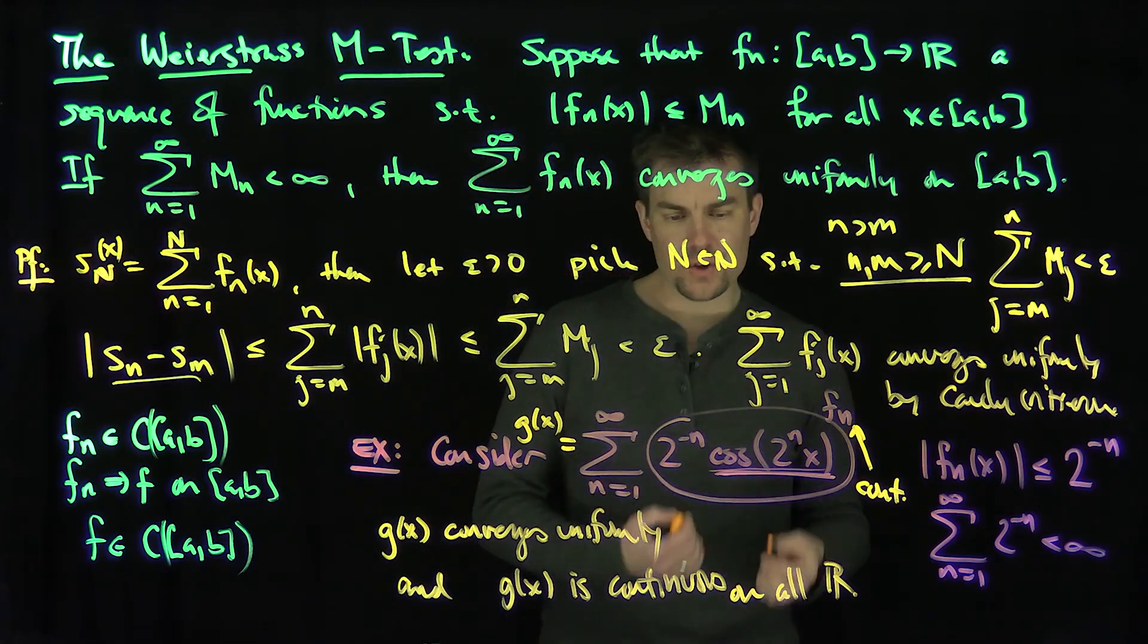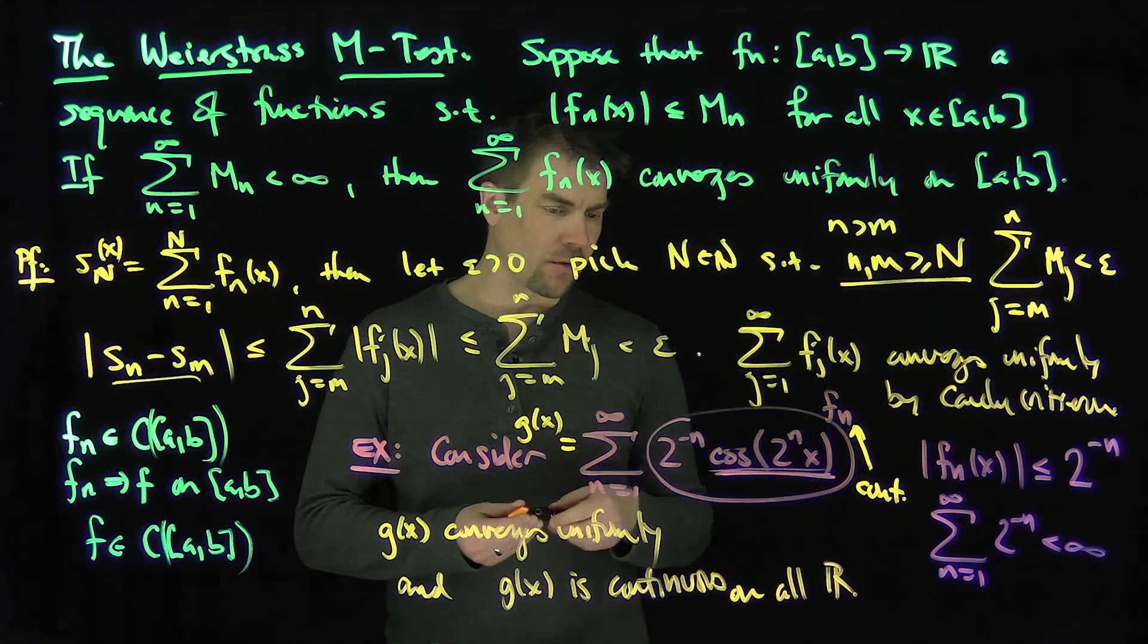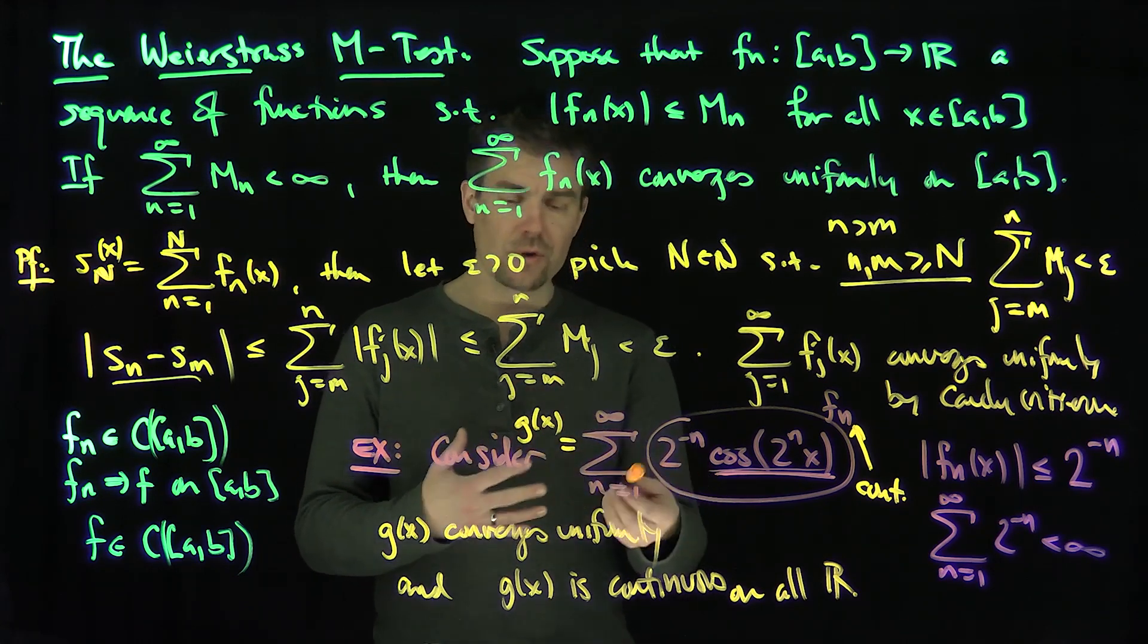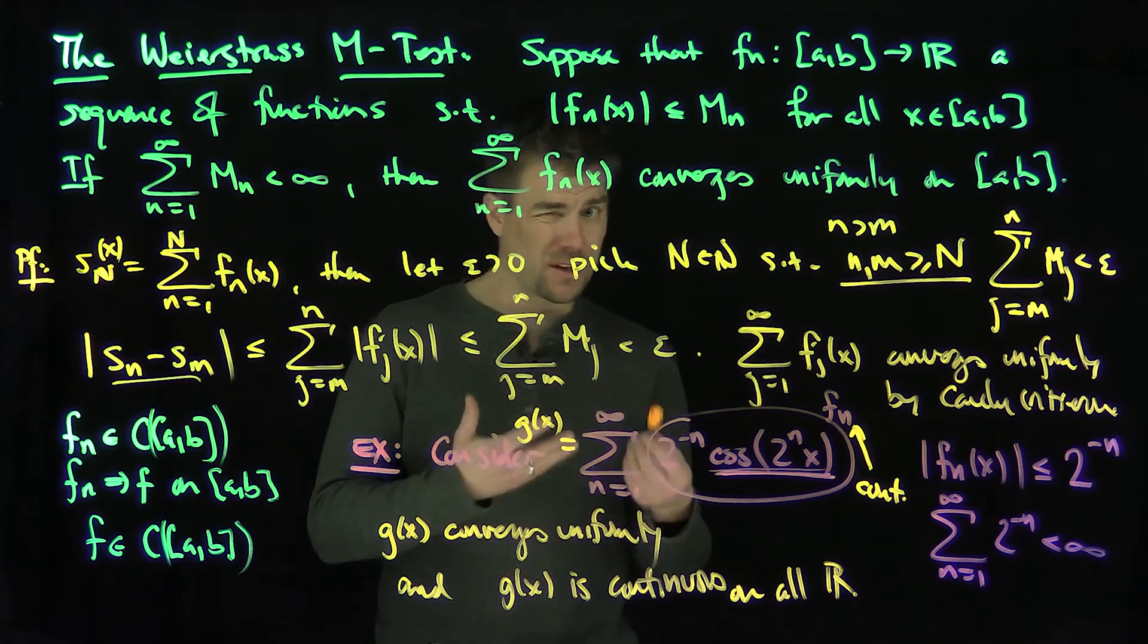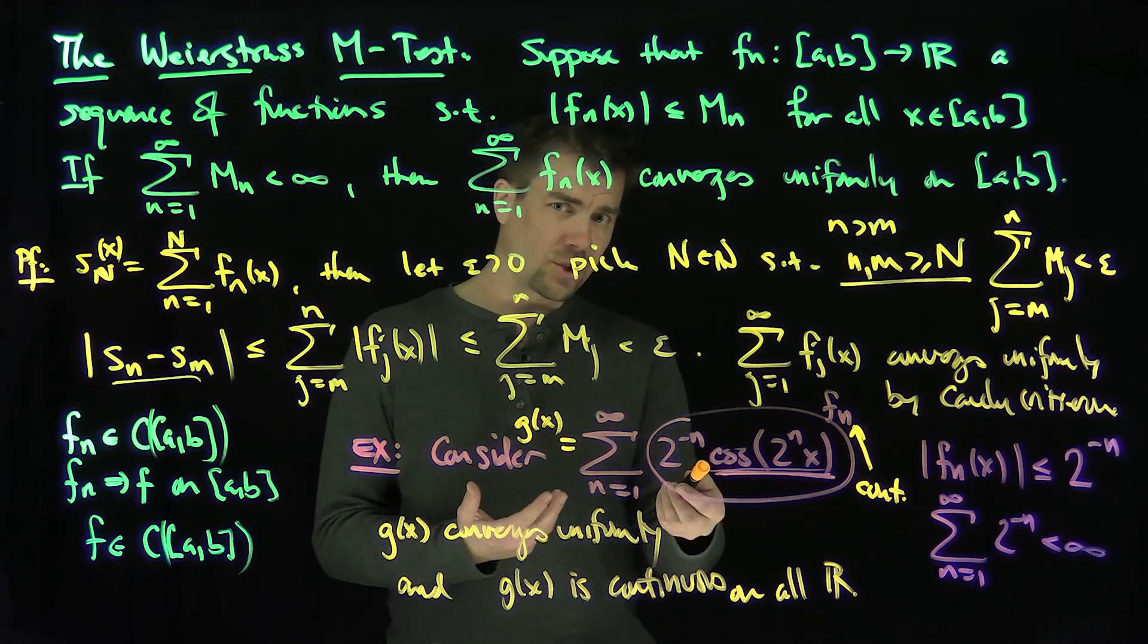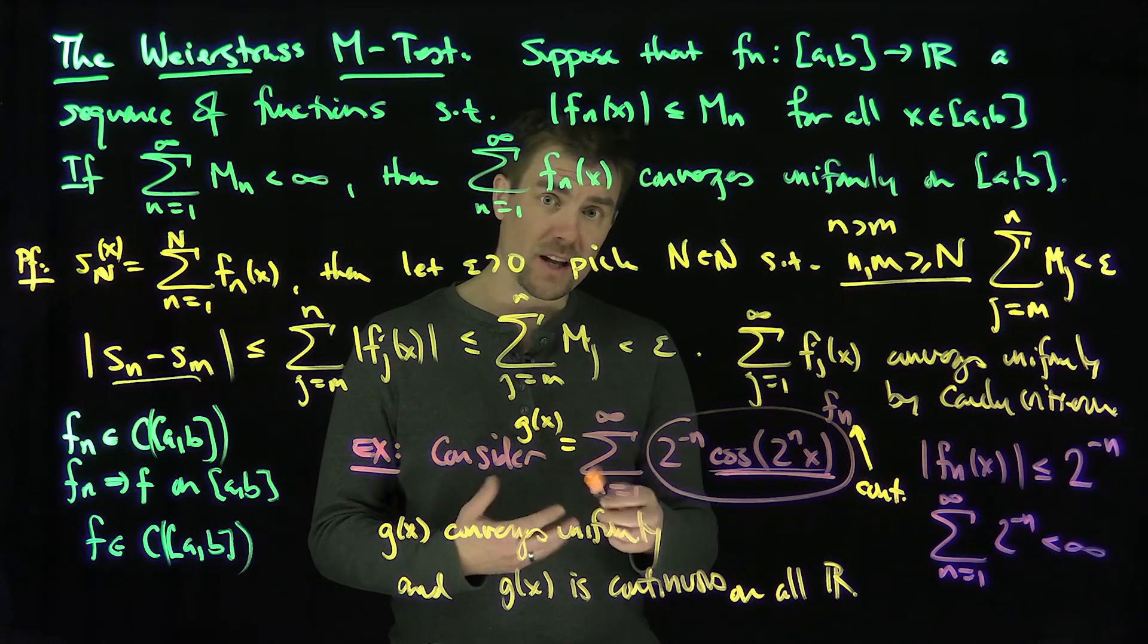Now, the interesting thing about this function is that while this function is continuous on all of R, you can show, and we'll show it later in videos, that this function is, in fact, nowhere differentiable. You can sort of get a rough sense of that just by doing the formal derivative. If I was to formally differentiate this, what would happen?